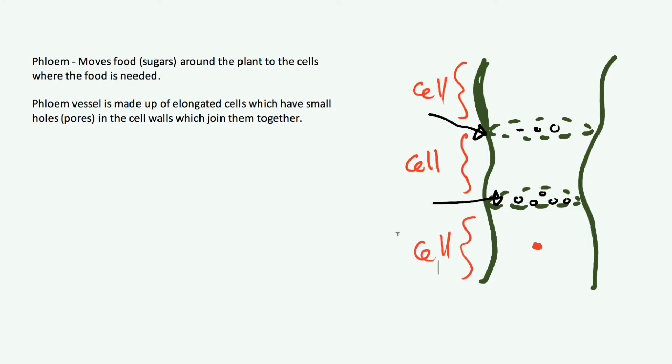The part between each of these pores is actually a cell. Translocation is the process by which the food is moved. The movement of these molecules, they could be sugars or other things, through the phloem is known as translocation. This occurs in both directions.